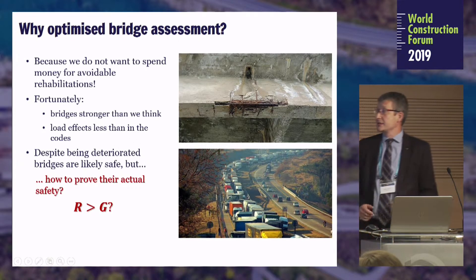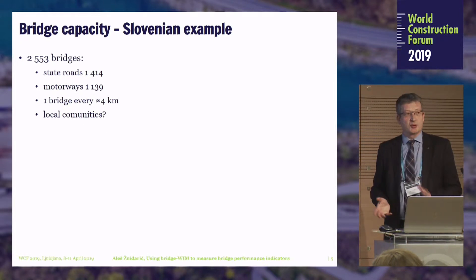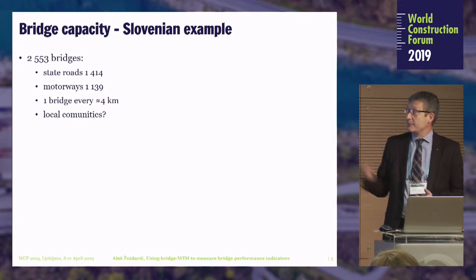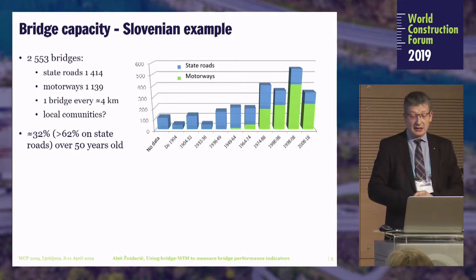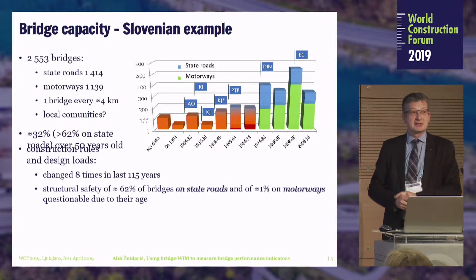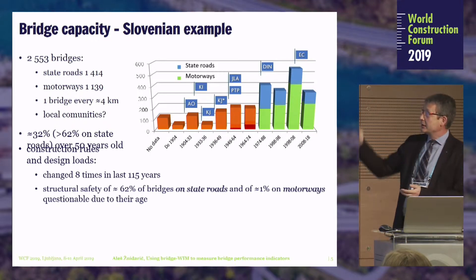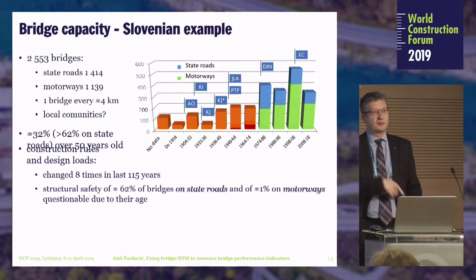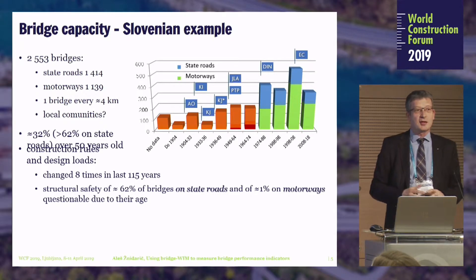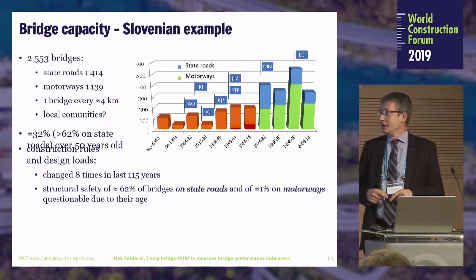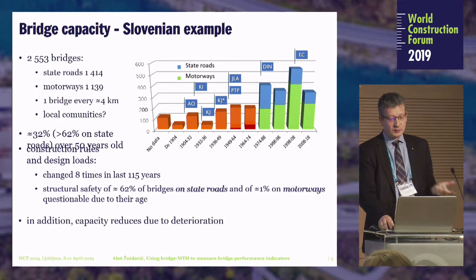Basically, how we show that the resistance of the bridge is higher than the load effects. This is an example from Slovenia — we have 2,500 bridges on the national road network, and this is the distribution of their age. The problem is that all the codes — we have used eight since 1904 — have different loading schemes included. Only the last two, based on the Eurocode and the former German code, are appropriate for today's loading. So in principle, all those bridges in red and orange are problematic only because of their age. We have to do something more, and this is what we call optimized bridge assessment.